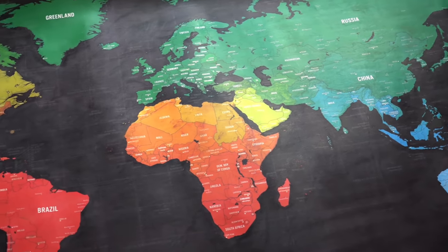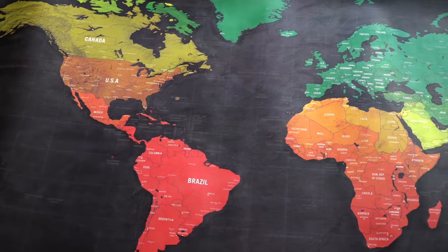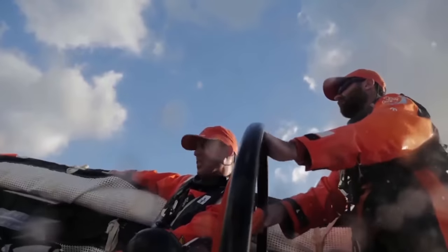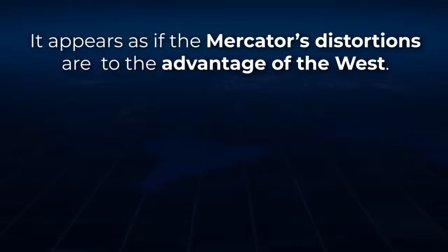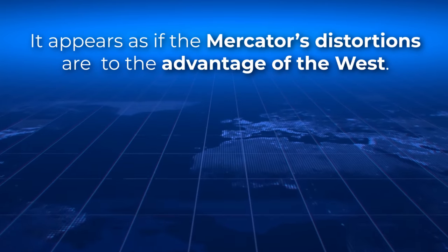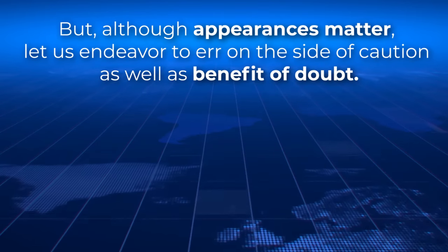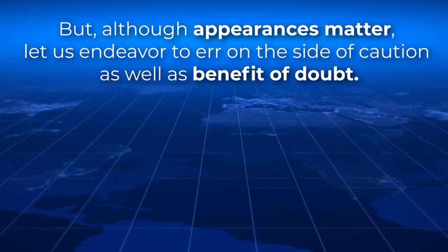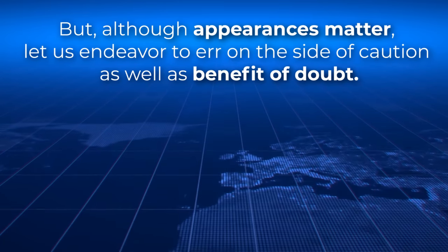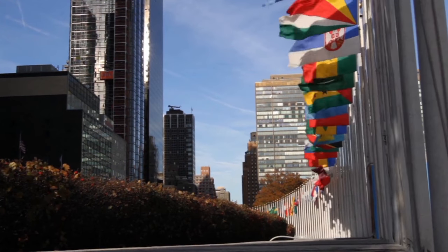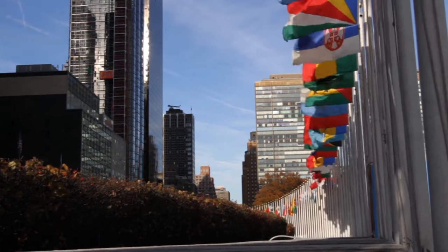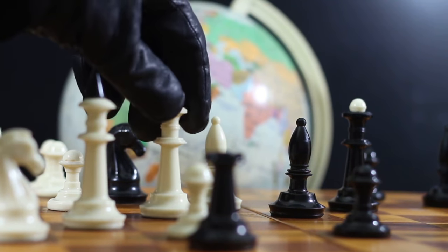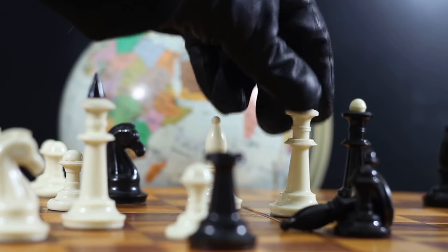Mercator is popular because of a historical legacy that has persisted since the 16th century, a time when maps were important tools for ocean navigation — it was created for a very particular purpose. It appears as if the Mercator's distortions are to the advantage of the West. But even though appearances matter, let us endeavor to err on the side of caution and give the benefit of the doubt. When countries favor policies that promote their own importance and national interests, that is called nationalism, and it would be strange indeed to find a country that does not.